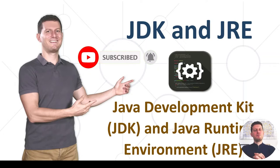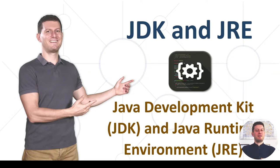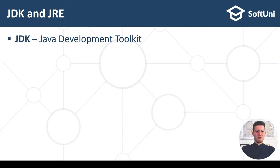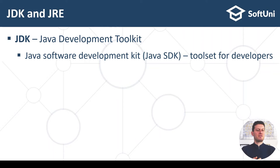Let's continue with the next topic about JDK and JRE. I will talk about the Java Development Kit — JDK — and Java Runtime Environment — JRE — which is a kind of old-fashioned technology slowly stepping down. JDK is short for Java Development Toolkit, or Java SDK — Java Software Development Toolkit. A Development Toolkit is a set of platform tools, compilers, and others. JDK provides a toolset for Java developers.